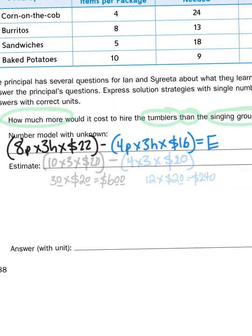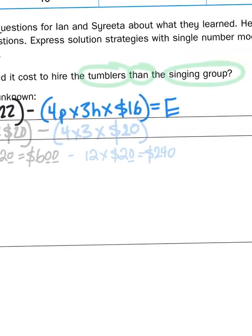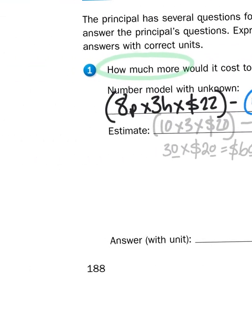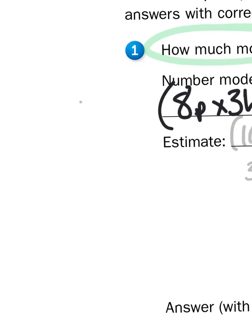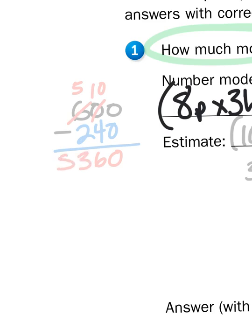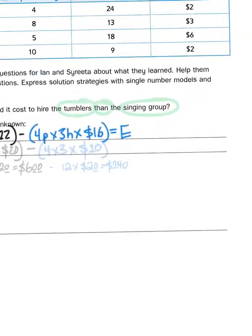So my subtraction problem, my estimated subtraction problem, is going to be 600 minus 240. Now I can just ignore the 1's place values because it's 0 minus 0. That gives me 0. 0 minus 4 doesn't work, so I've got to borrow a 100 from 600, making it 500 and 10 tens. 10 minus 4 is 6. 5 minus 2 is 3. My estimated difference between hiring the tumblers versus the singers is going to be $360.